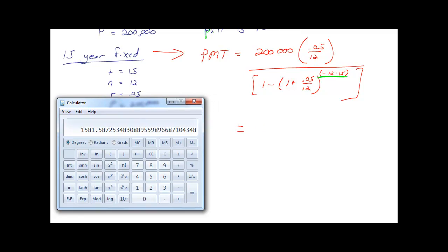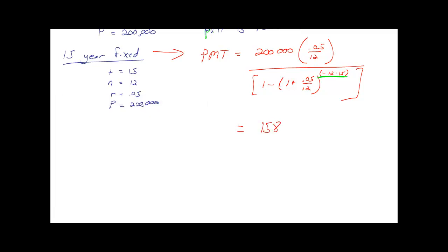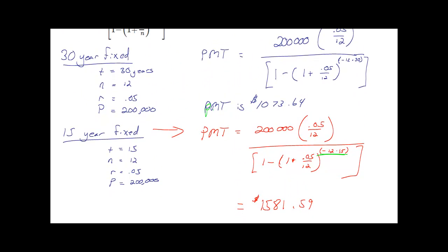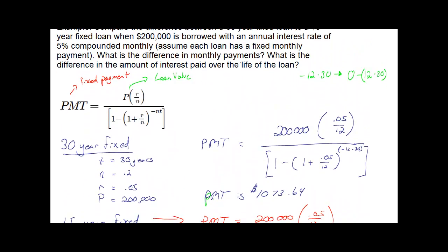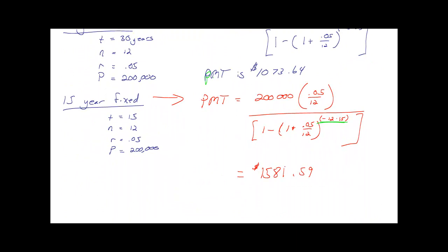By going from a 15 to a 30-year loan, I double the length of the loan period, but it doesn't half the payment. About a third of the payments is taken off to extend your loan twice as long. But if you extend it over a longer period, you're going to end up paying more interest for that $200,000 you borrowed. What is the difference in monthly payments?